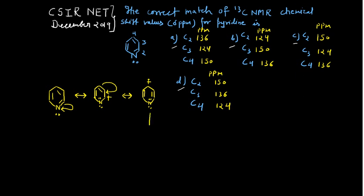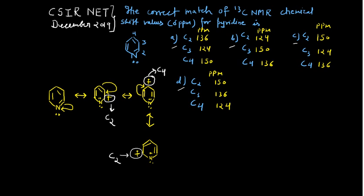In the last step, you can move this electron pair over there, and you are left with nitrogen having two lone pairs and a positive charge at that position. Now check the charges: a positive charge is present at C4 in one structure, at C2 in another structure, and again at C2 and C3 as you trace through the resonance forms.